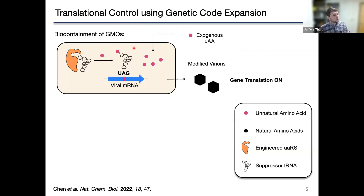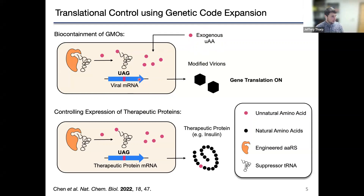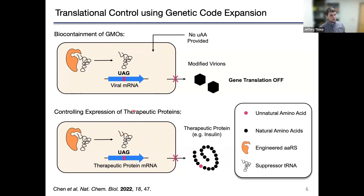Genetic code expansion has been used for biocontainment — to control the expression of genetically modified viruses. A UAG stop codon is inserted into one of the essential viral genes, with the idea that the protein encoded by this gene will not be produced unless we provide an exogenous unnatural amino acid. The amino acid is attached onto the suppressor tRNA, suppressing the stop codon and allowing translation. Similarly, genetic code expansion has been used to control the expression of therapeutic proteins such as insulin — inserting a UAG stop codon within the insulin gene and adding an unnatural amino acid to induce stop codon suppression. With both examples, we rely on the assumption that in the absence of the unnatural amino acid, the protein will not be produced because translation will stall at the UAG stop codon.